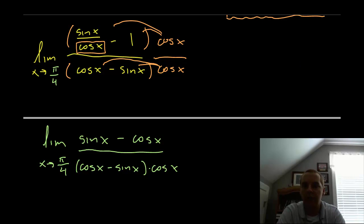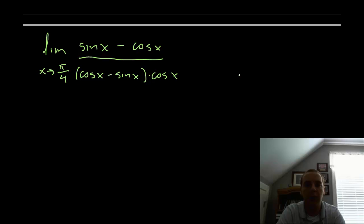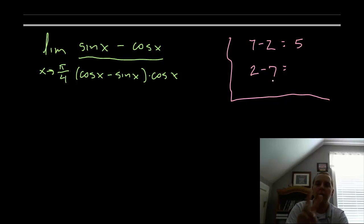What I notice is that sine x minus cosine x looks roughly like cosine x minus sine x with the obvious change in order. Well it's pretty straightforward algebra. If we compare the quantities 7 minus 2 versus 2 minus 7, you see 7 minus 2 would be 5, but when you reverse the order you get the same numerical value, it's just a different sign. Well that's precisely what's going to happen here.